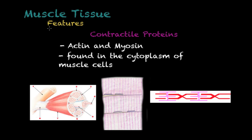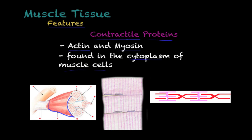Looking at the characteristics of muscle tissue cells: one thing already mentioned is that they have contractile proteins — actin and myosin — and these are found in the cytoplasm of muscle cells. To illustrate this in a little more detail, I have three pictures. The first one is a macroscopic view of a muscle.